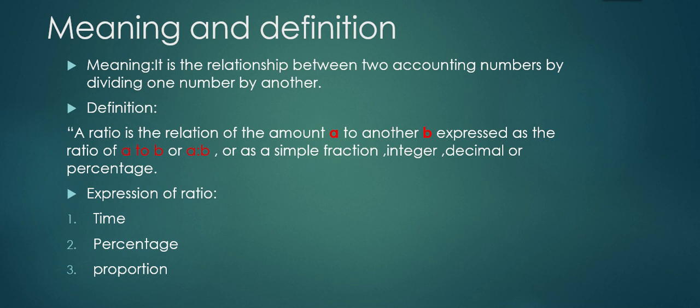The three forms are: time, percentage, and proportion. In the time or rate or coefficient form, a ratio is a quotient obtained by dividing one item by another item, and the resultant is expressed in the form of times. For example, when sales is divided by stock and it comes up to six or seven times, that ratio between sales and stock is expressed as six times.